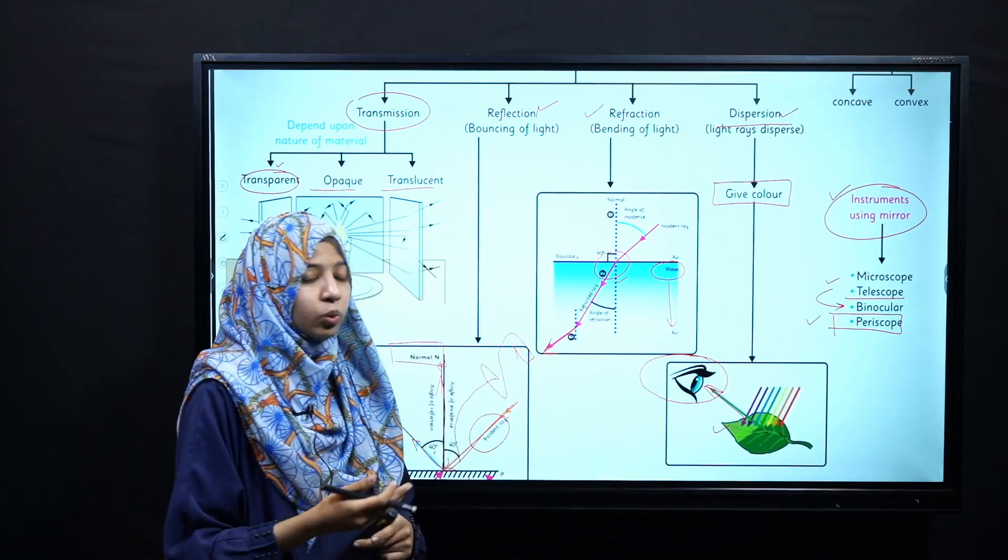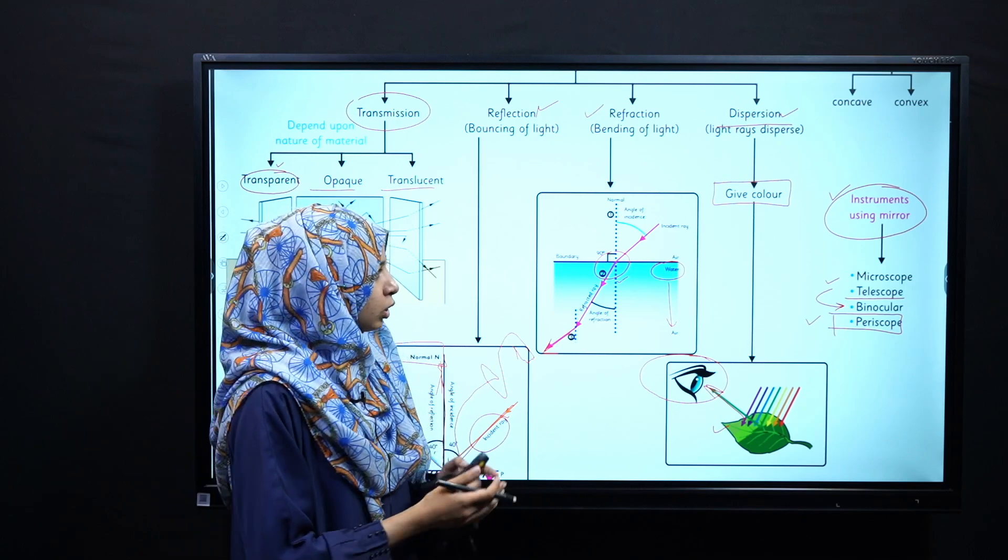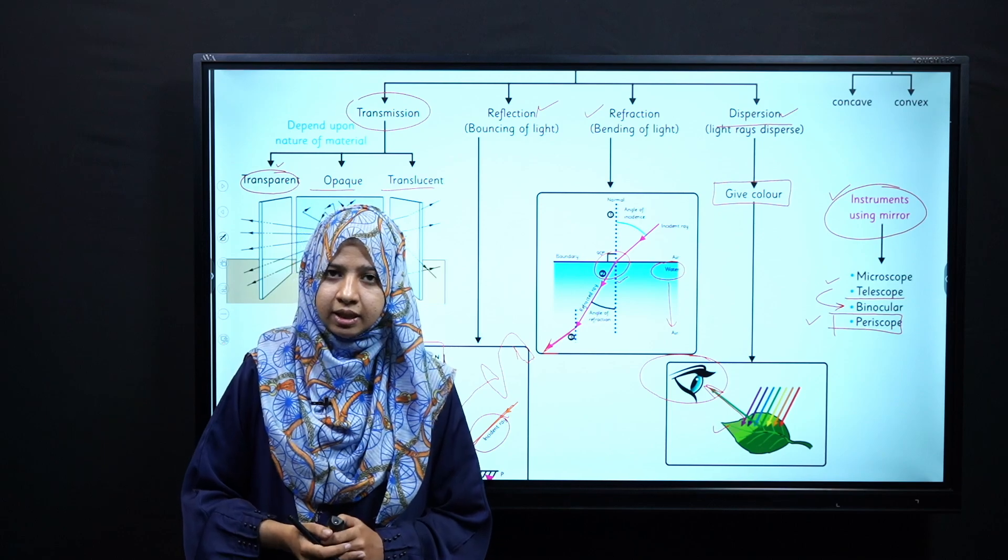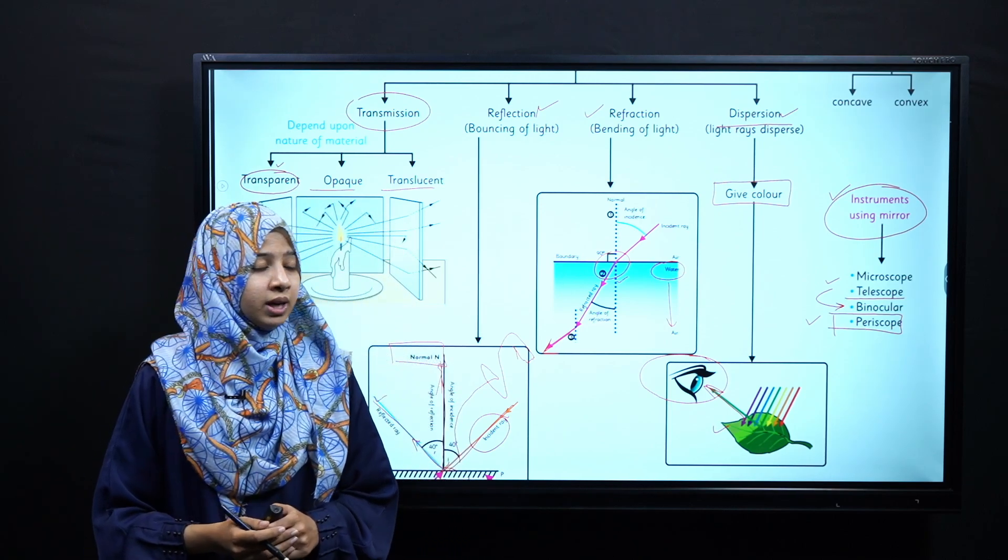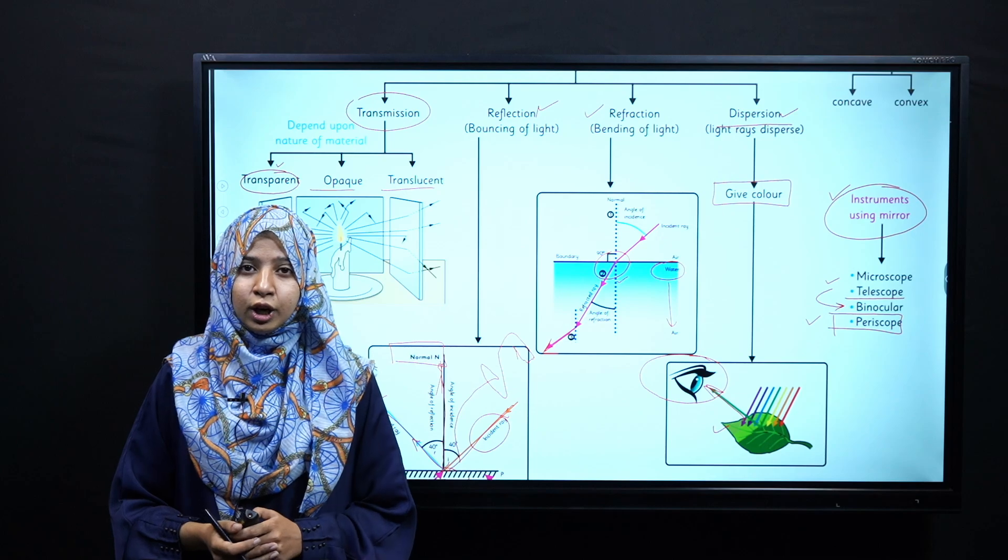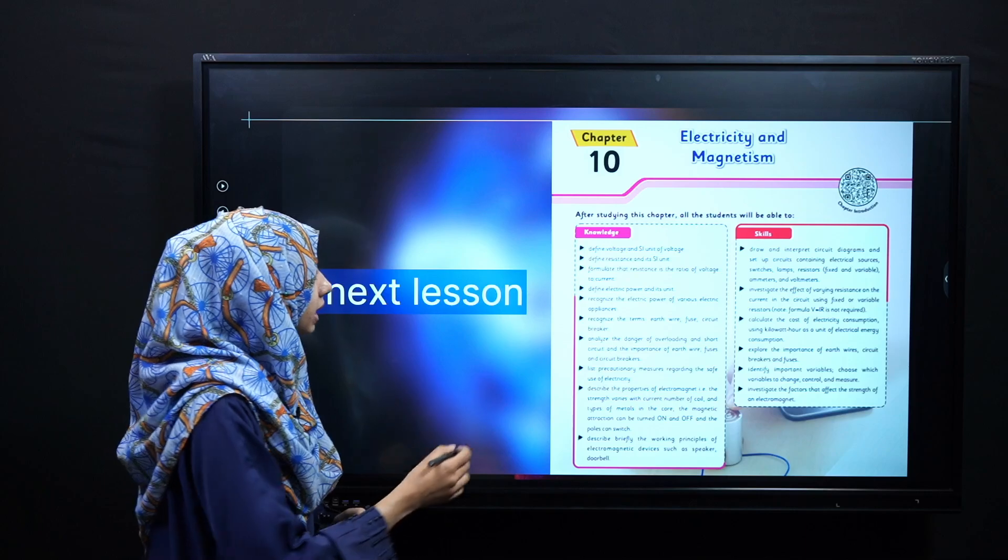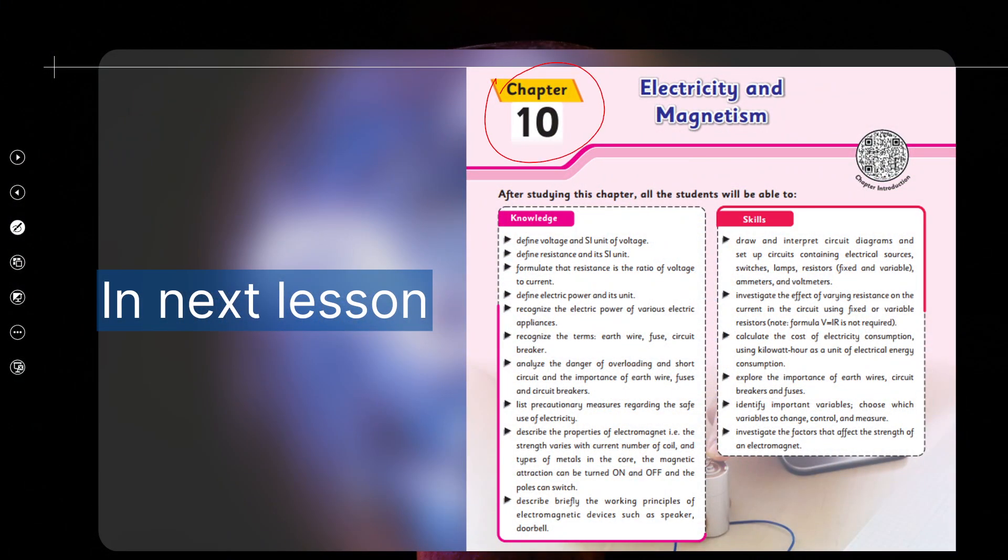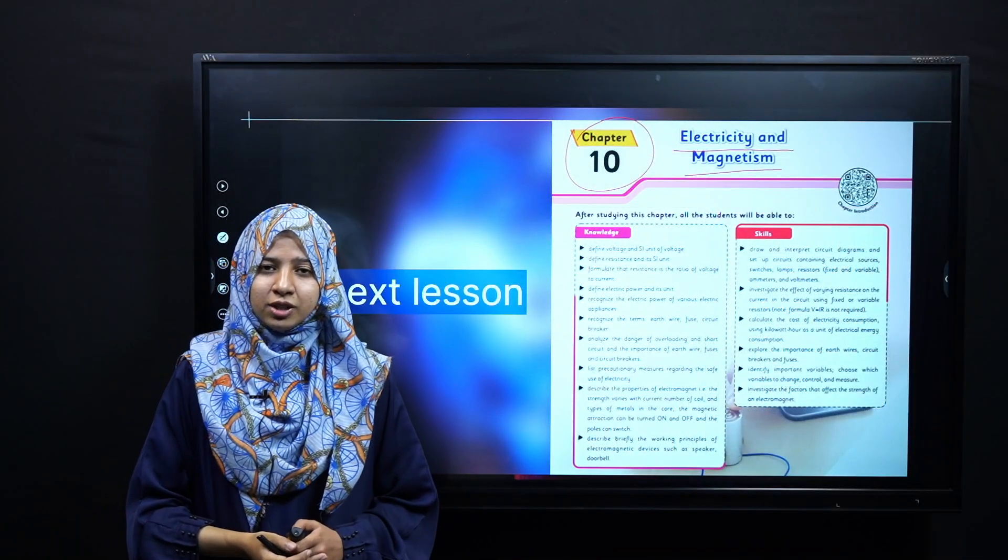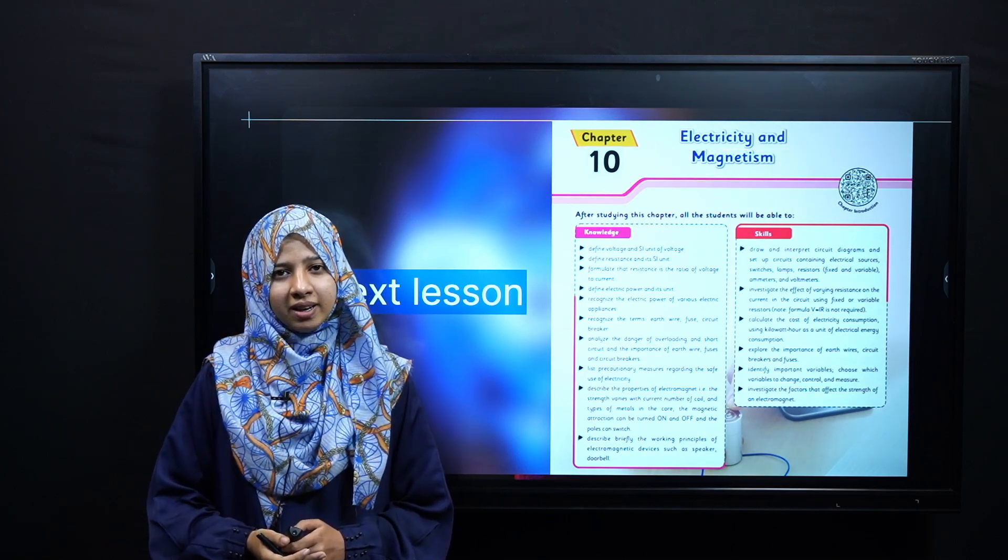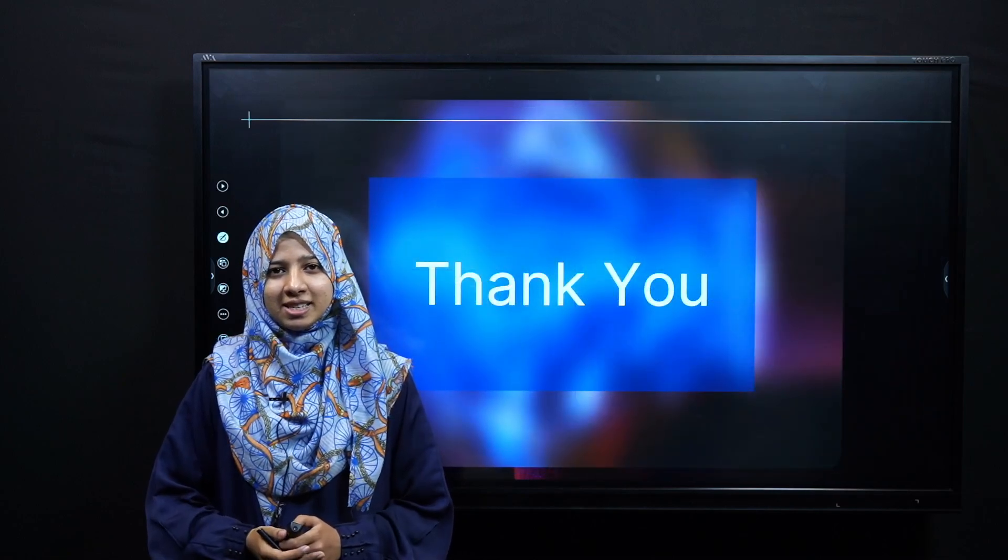To yeh thi wo tamam topics jinko humne discuss kiya aapne is chapter ke andar. Mujhe umeed hai ke aapko yeh revise ho chuki hongi. So dear students, yeh tha humara aaj ka lecture. Inshallah aapne agli lecture ke andar hum apne chapter number 10 ko discuss karenge which is about electricity and magnetism. So that's all about today's lesson dear students. Inshallah agli lecture ke andar isko start karenge. Tab tak ke liye apna khayal rakhiye ga. Thank you very much and Allah hafiz.